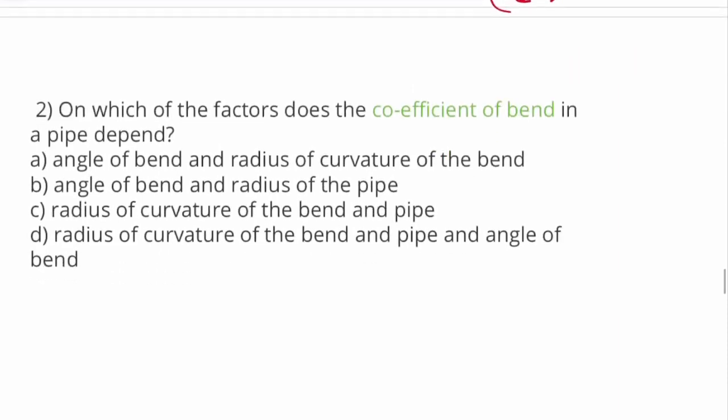Which of the factors does the coefficient of bend in pipe depend on? I already told you that minor loss will be even bend in pipe, so head loss will be h equals k into v² divided by 2g. Now we have a question of bend in pipe coefficient of bend, that is k.